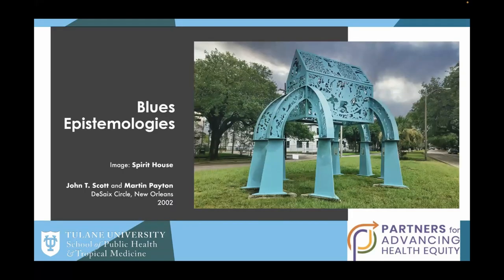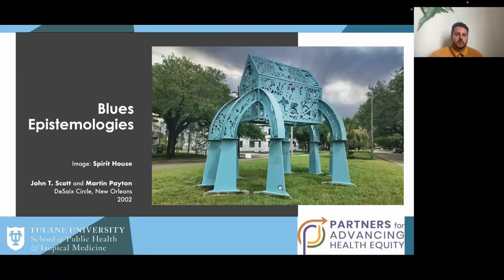We're going to talk about a framing concept: blues epistemologies. This sculpture, Spirit House by Martin Payton, is located in New Orleans at the edge of the Gentilly neighborhood on St. Bernard Avenue. It's a piece of public art created to talk about the African American experience in New Orleans — the very diverse range of cultural influences that came to make this city. It uses the built form of the shotgun house to encapsulate the richness of culture, buttressed by an architectural form from Europe and North Africa — the flying buttress you see in churches. It's an architectural and sculptural metaphor for cultural mixing and the power that comes from acknowledging how our culture is made from diverse influences.